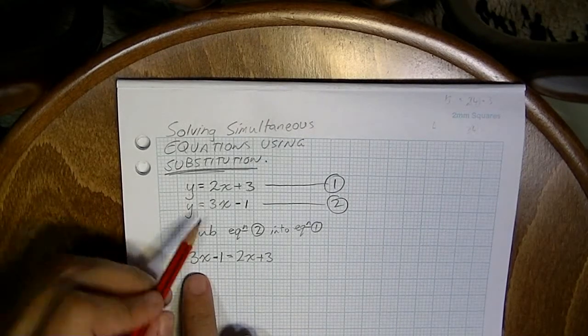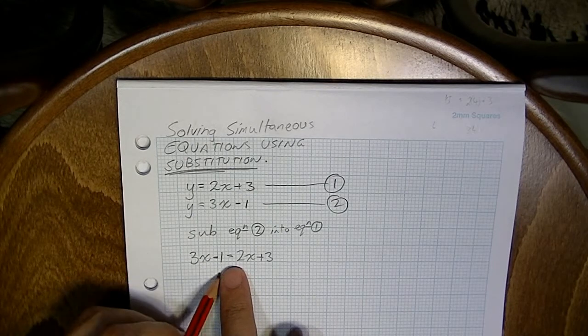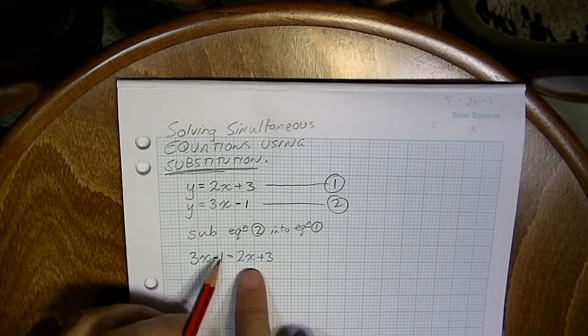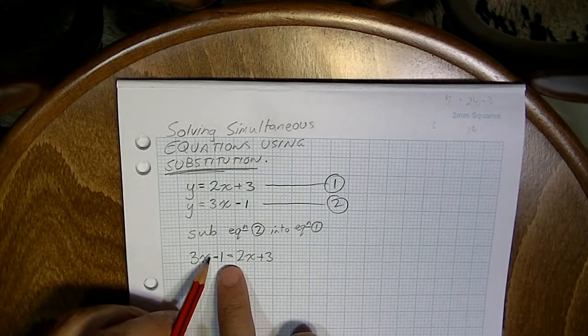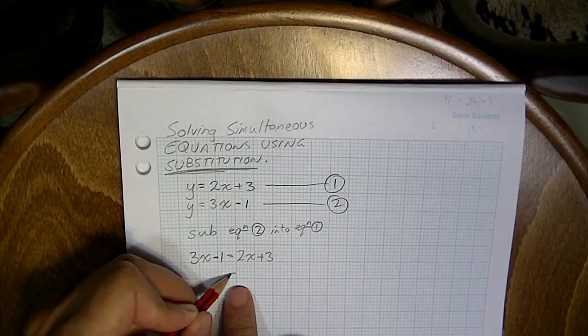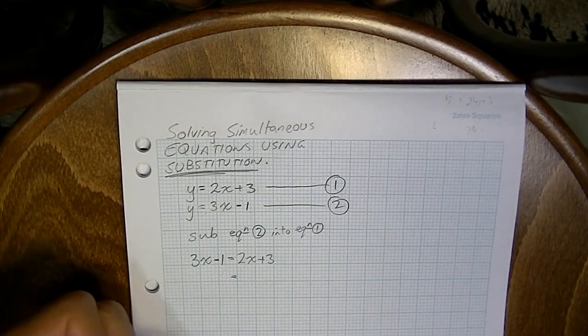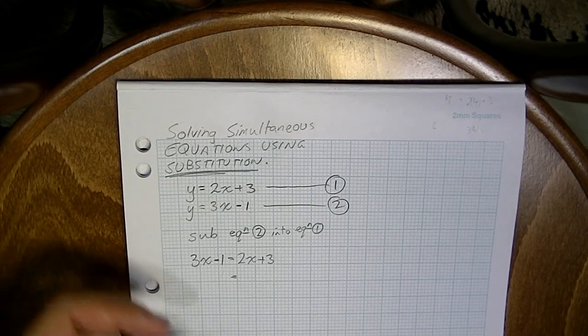Okay, so you hopefully can see what I've done here. This is actually equation 1, y, this is y here, equals 2x plus 3, but we've taken equation 2 and subbed it in where y used to be. Now, after this, it's really just a basic piece of algebra, which you learnt in the last unit. So if you're having trouble with that stuff, make sure you go back and check it out.